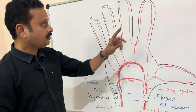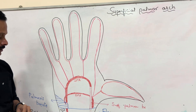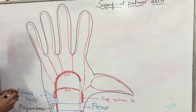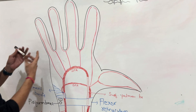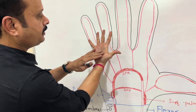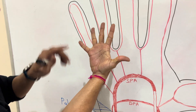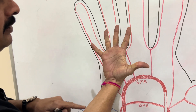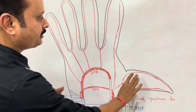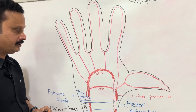Our topic is now the superficial palmar arch. This is the palm of the right side — this is the ulnar side, that is the median side, and this one is the thumb.